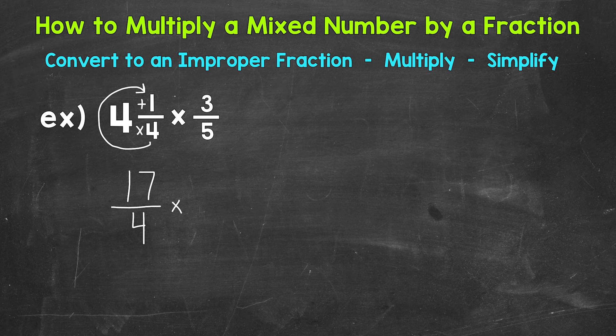Bring down our multiplication sign and then our fraction. At this point, we are ready to multiply. And we multiply straight across when we multiply fractions. So the numerator times numerator, and then denominator times denominator.